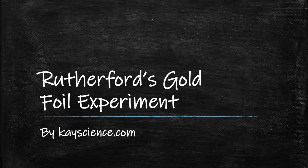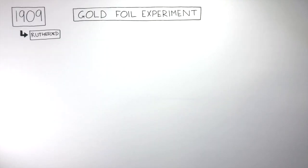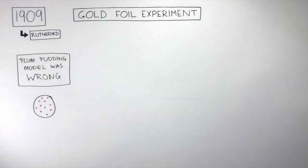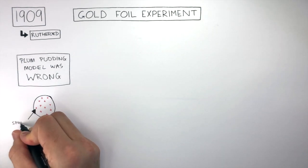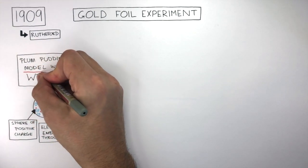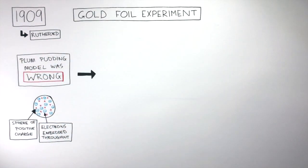Rutherford's Gold Foil Experiment by Kscience.com. In 1909, the famous gold foil experiment was carried out by Rutherford and his team. This experiment proved the Plum Pudding model was wrong. Dalton said the atom was a sphere of positive charge with electrons embedded throughout. Rutherford and his team proved this model was wrong, and we're now going to find out how he did this.